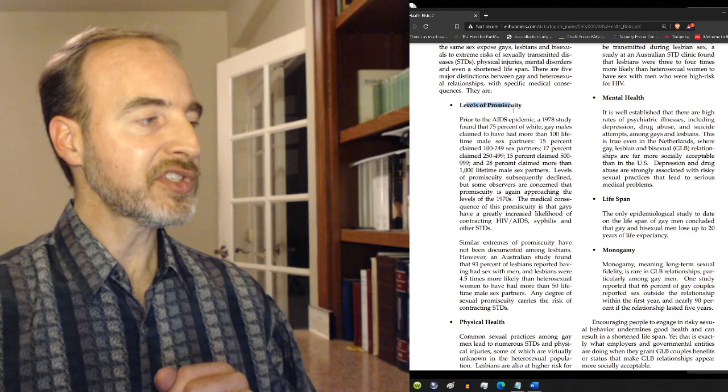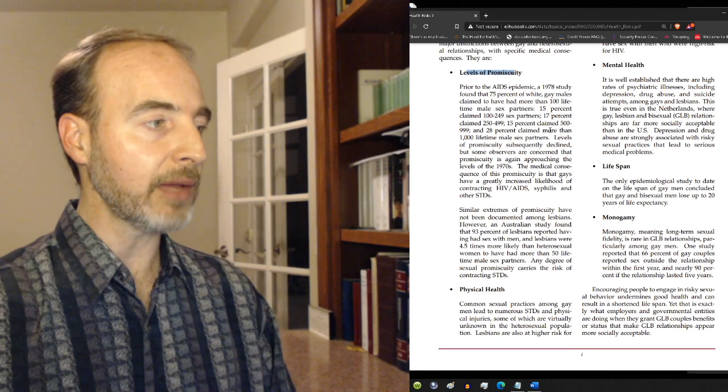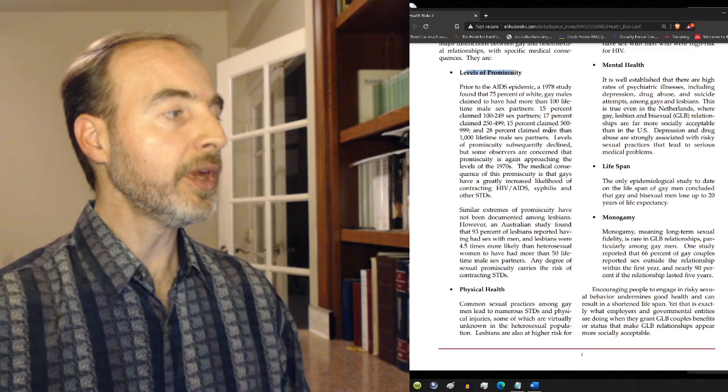There are five major distinctions between gay and heterosexual relationships with specific medical consequences. They are levels of promiscuity. Prior to the AIDS epidemic,